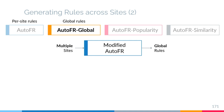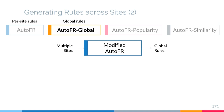The second approach, we call AutoFR Global. We modify AutoFR to take in multiple sites and output global rules. A simple way to do this is to modify the reward function: when we test a rule, we apply it individually to the given sites, average that reward, and use that average as the reward for the global rule.